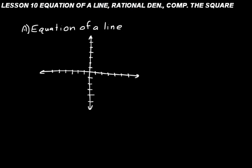The horizontal axis is called the x-axis and the vertical one is called the y-axis. Euclid's first postulate is that it takes two points to determine a unique straight line. So we could plot the coordinates of two points — let's put one at one comma two, which means we went right one and up two, and another at three comma three.